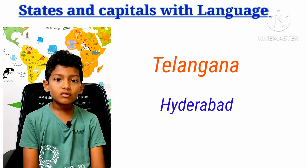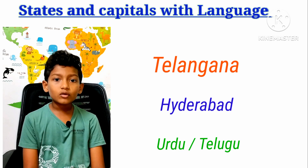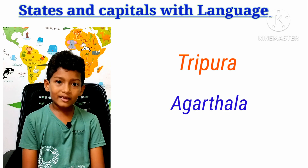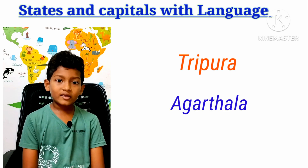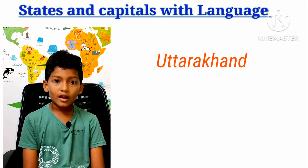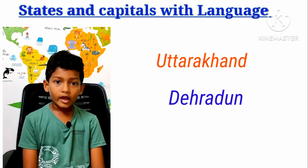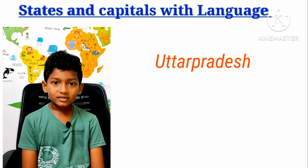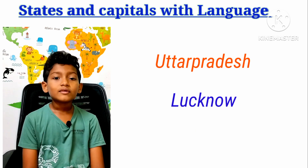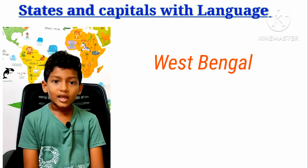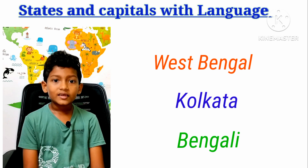Sikkim chapter: Gangtok, Language: English. Tamil Nadu chapter: Chennai, Language: Tamil. Telangana chapter: Hyderabad, Language: Urdu and Telugu. Tripura chapter: Agartala, Language: English and Bengali. Uttarakhand chapter: Dehradun, Language: Hindi. Uttar Pradesh chapter: Lucknow, Language: Hindi. West Bengal chapter: Kolkata, Language: Bengali.